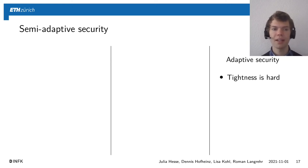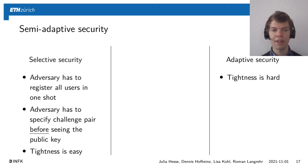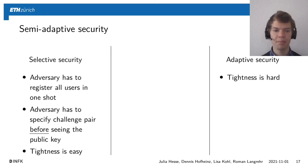Finally, I want to talk about semi-adaptive security. What we have analyzed so far is adaptive security, and we have seen that tightness is quite hard to achieve. On the other hand, selective security is a notion where the adversary has to register all users in one shot and specify the challenge pair before seeing the public key. In this setting it is very easy to achieve tightness because the reduction knows exactly where to embed the challenge — for example, the Diffie-Hellman key exchange is tightly secure in the selective model.